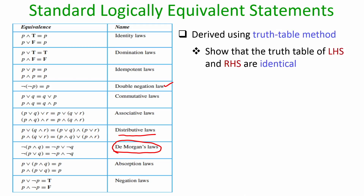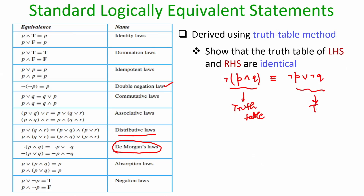How do we verify whether these logical identities are correct? We can use the truth table method: construct the truth table of the left-hand side expression, draw the truth table of the right-hand side, and verify whether they are the same. For example, to verify De Morgan's law, the first part says the negation of conjunction of P and Q is logically equivalent to negation P disjunction negation Q. You can draw the truth tables for both sides and verify that all rows are equivalent, confirming it as a logical identity.